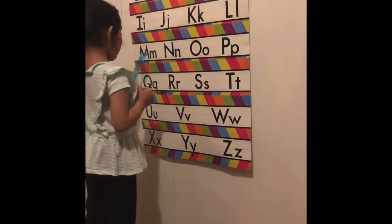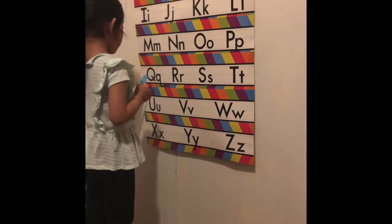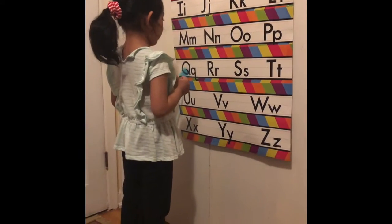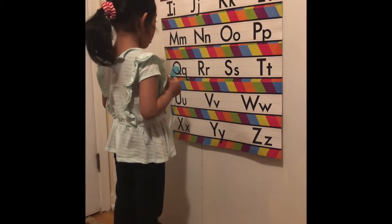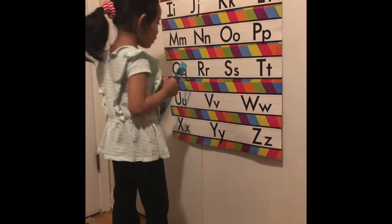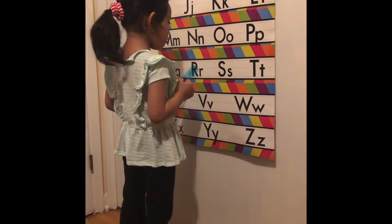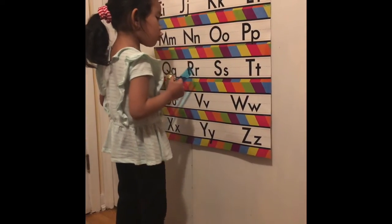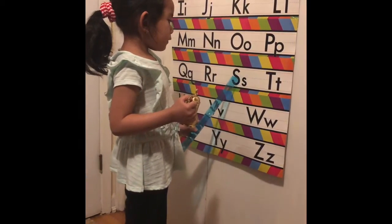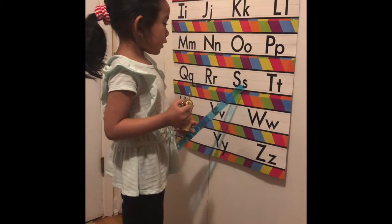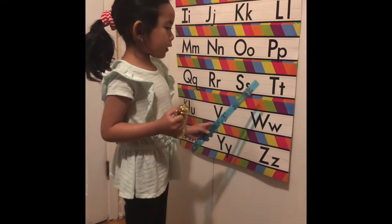Q is for quad. R is for rabbit. S is for sleeping.